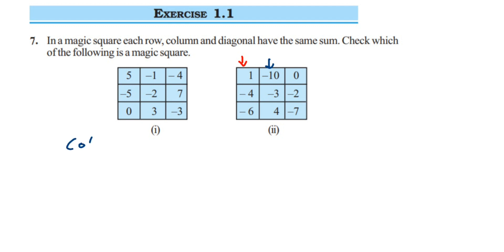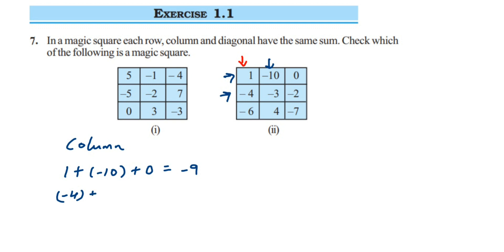For the columns of the second square: first column is 1 + (−10) + 0. Different signs: 10 − 1 = 9, sign is negative (10 is greater), so −9. Second column is (−4) + (−3) + (−2). All have negative signs, so add: 4 + 3 + 2 = 9, sign remains negative — giving −9.